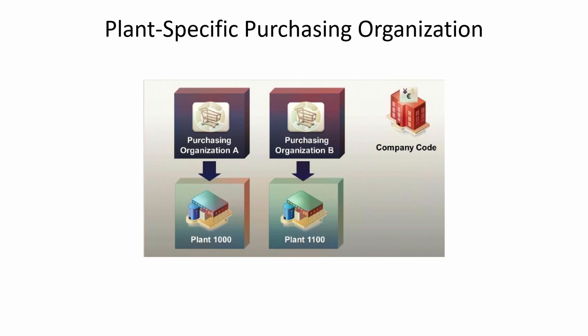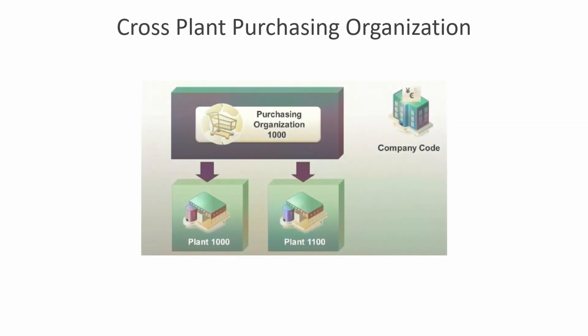In the case of plant-specific purchasing organization, we must assign purchase organization to both plant and company code. For cross-plant purchasing organization, we assign a single purchasing organization to multiple plants. Assigning purchase organization to company code is optional in this case.